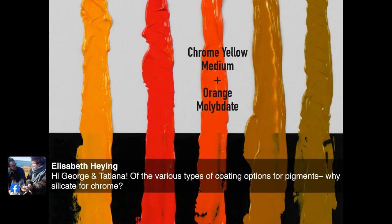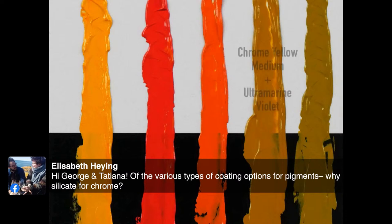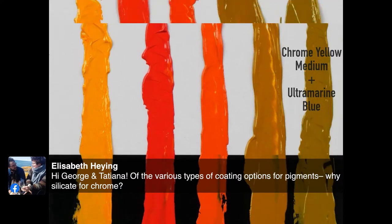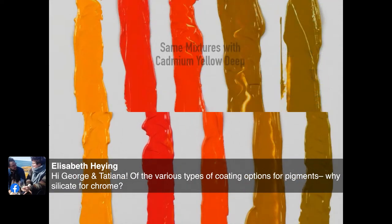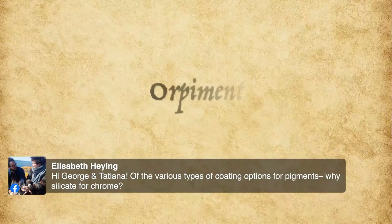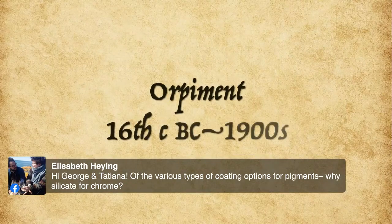I do need to mention the prices. Lead tins are more expensive. Naples yellow is even more expensive. It's due to the pigments. Cadmiums in this case would be less expensive.